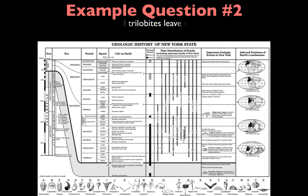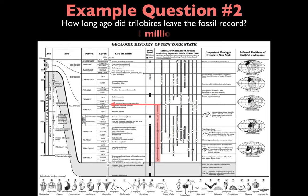Another example question: how long ago did trilobites leave the fossil record? Trilobites is a group of fossils, so if we find the trilobite fossil group bar, you'll notice it suddenly stops at the top of the bar — that's when trilobites went extinct and left the fossil record. Bring that over to the time scale and you'll see that was 251 million years ago.